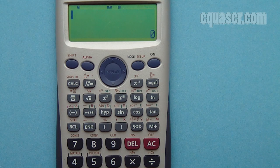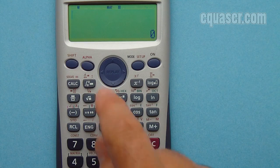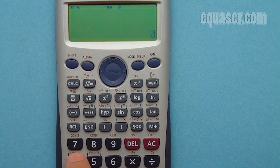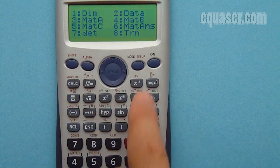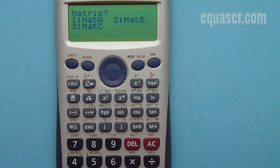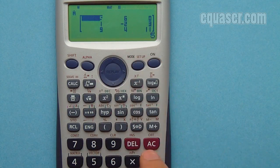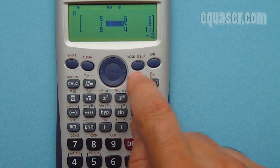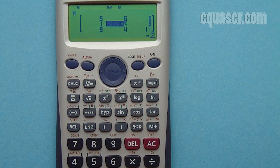If you want to edit a matrix that is stored in memory, we press shift, matrix, press 2, and then press 1. This is the matrix with the data. Let's say I want to replace negative 2 with 8.